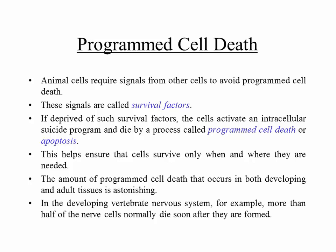In a multicellular organism made up of 100 trillion cells, if you have a few hundred cells in bad shape, it's better they die instead of messing up the whole organism. Programmed cell death helps ensure that cells survive only when and where they are needed. For example, in the developing vertebrate nervous system, more than half of the nerve cells normally die soon after they are formed — because if you're forming a communication network, you need the right number of nodes, and extra cells that don't fit are eliminated by apoptosis.